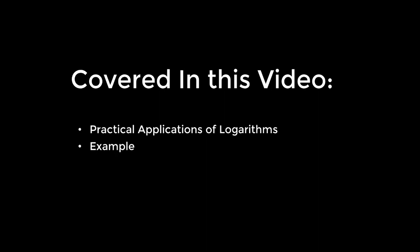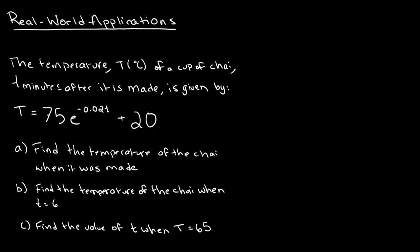In this video, I will be going over questions involving practical applications of exponential equations. Over here, we have a question stating that the temperature T in degrees centigrade of a cup of chai T minutes after it is made is given by the equation T equals 75 times e to the power of negative 0.02 times T plus 20. And there are three parts to this.